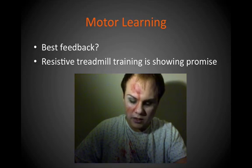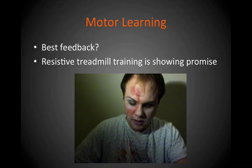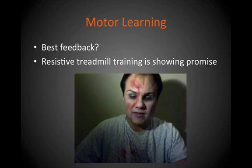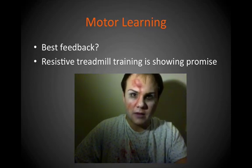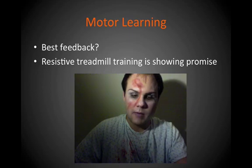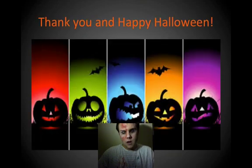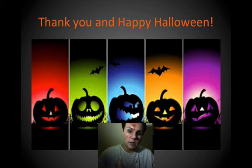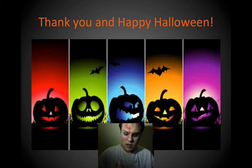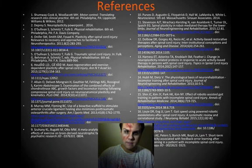Researchers found increased functional connectivity strength in the motor cortex via fMRI, as well as increased somatosensory excitability and corticospinal excitability. Further studies need to investigate this type of feedback for teaching patients with spinal cord injury to ambulate, but this one study is at least promising. That wraps up my presentation on neuroplasticity and how to facilitate it in spinal cord injury rehabilitation. Please refer to the more in-depth handout for specific information and citations. Thanks for listening and have a happy Halloween.